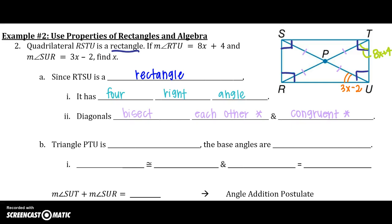But I want you to notice, because they're congruent, and I want you to look at triangle UTP. Notice what type of triangle you have. I can see that it is isosceles, which makes the base angles congruent.